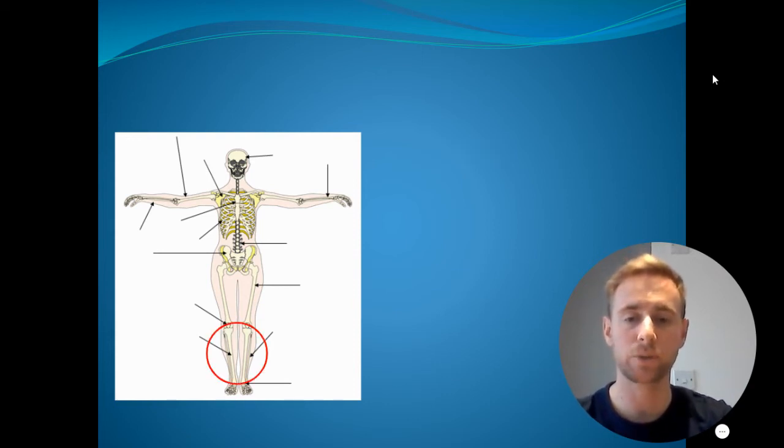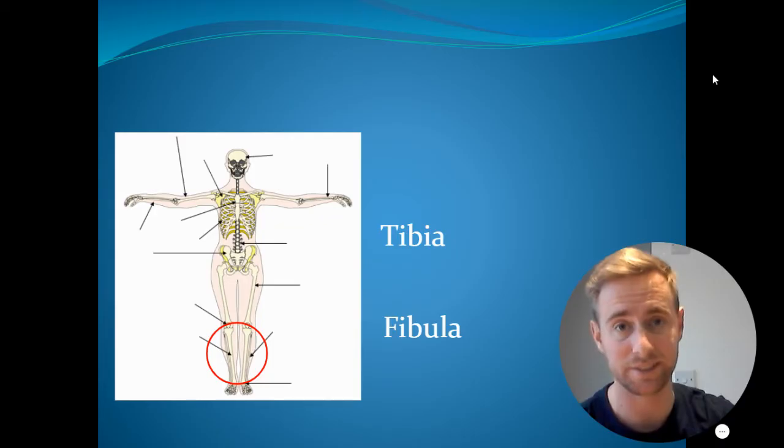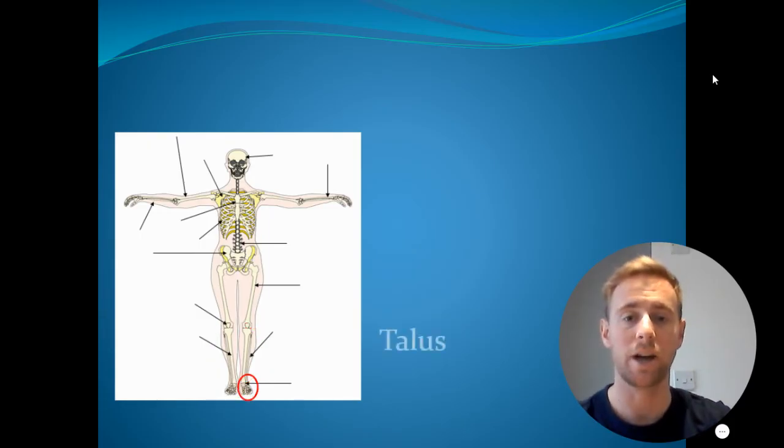And then in the bottom of our leg we have two bones again. We have the tibia and the fibula. The way we remember this is the tibia is attached to the tibialis anterior muscle, which is on the front of our shin. So the tibia must be at the front because it's attached to the muscle, and the fibula is at the back. Then our final bone we need to know in our ankle is called our talus, and this is a short bone.